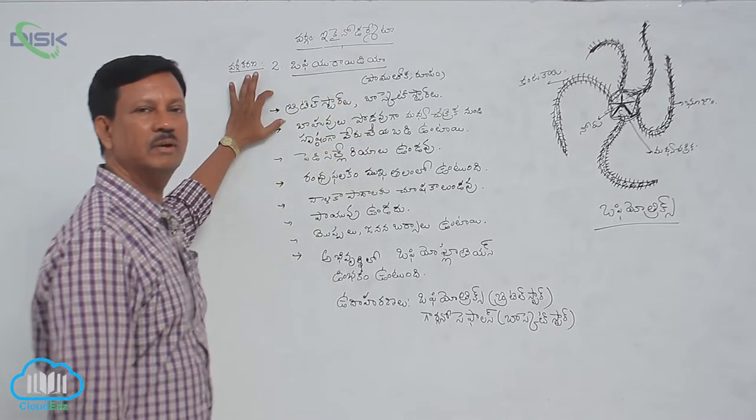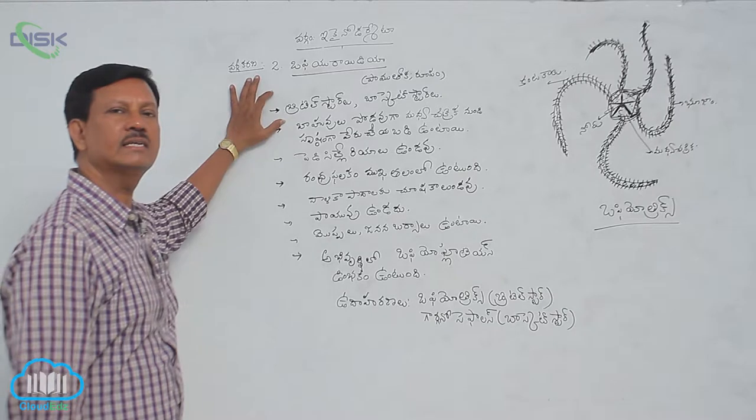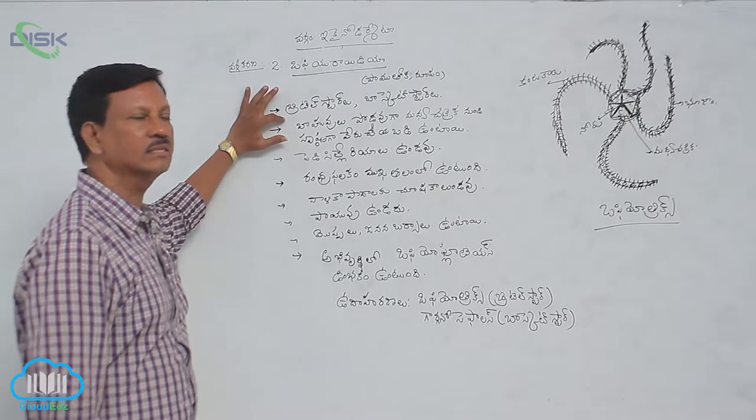When we talk about this class, they are called the Brittle Star or the Basket Star.